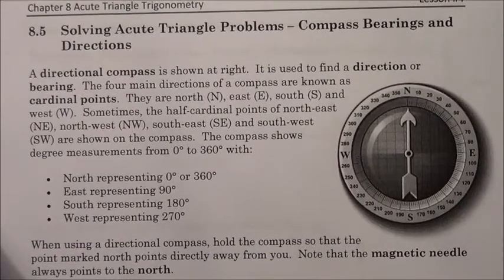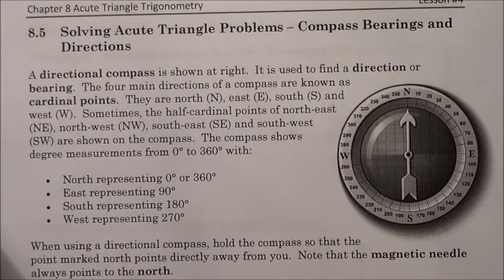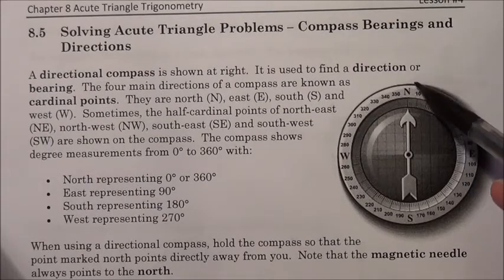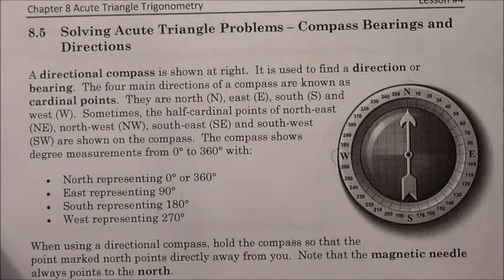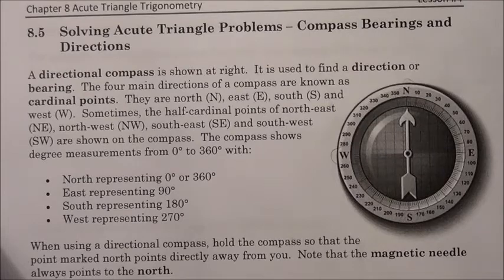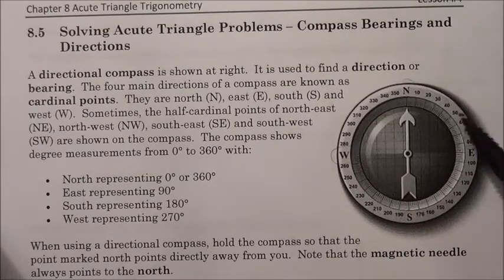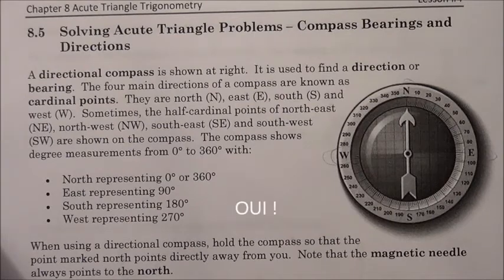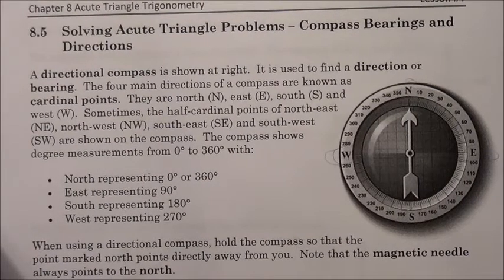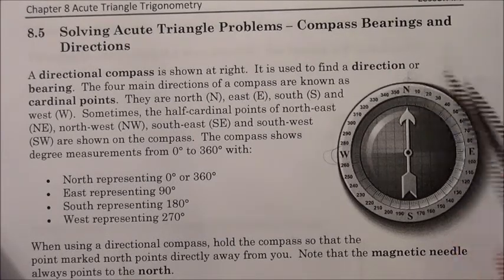Cardinal directions are the directions where we recognize north, south, east, and west. Or in clockwise direction: north, east, south, and west. In case you have a hard time remembering, 'never eat salty worms.' Or notice that these two letters spell the word 'we' — as in us. North is always directly away from us.